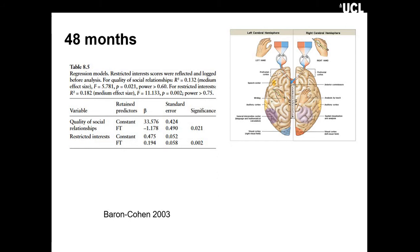At 48 months, quality of social relationships and restricted interest were both predicted by fetal testosterone in separate regression analyses. Higher fetal testosterone meant a person would be more restricted in their interest. It's thought that those with autism have very narrow interests, and perhaps fetal testosterone was related to that.